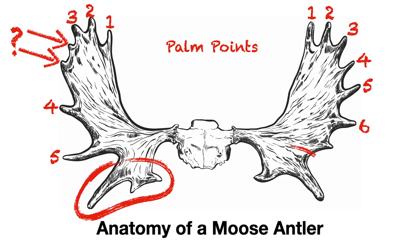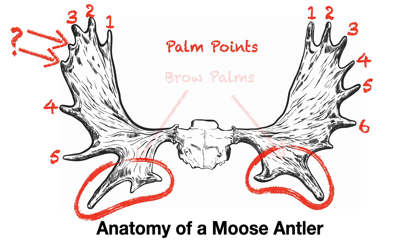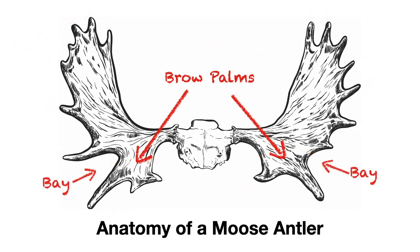We talked about the palm points, but what about these two areas down here — how come we didn't count the points? These are the brow palms. They're defined by deep bays that separate them from the main palms. In most cases, these bays are readily visible on a live moose in the field once you know where to look. But some bulls lack this bay, and the antlers are essentially one palm all the way from the brow area to the main palm — just a big basket of tines. On bulls like that, it's difficult or impossible to identify the separation between the main palm and the brow palm until you have the animal on the ground, and sometimes not even then.